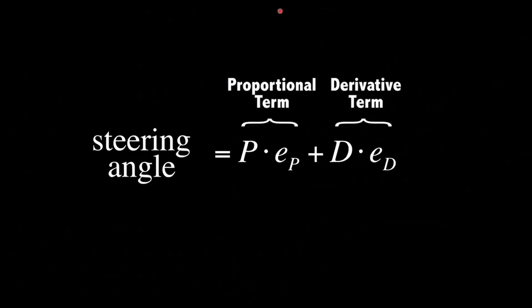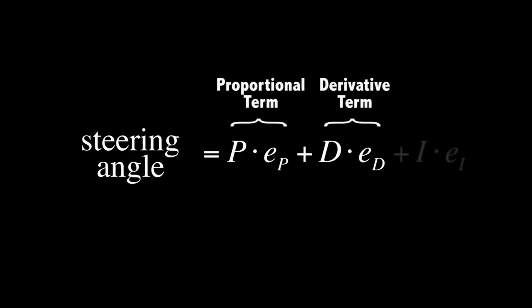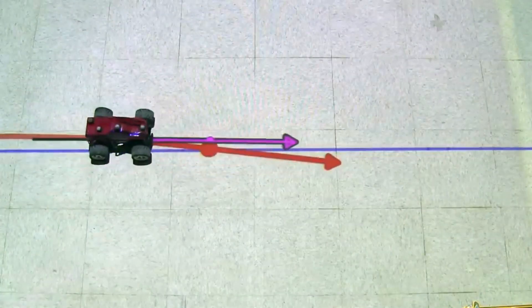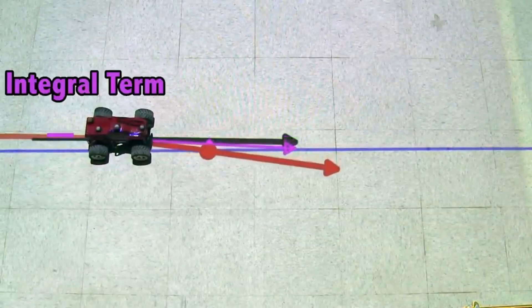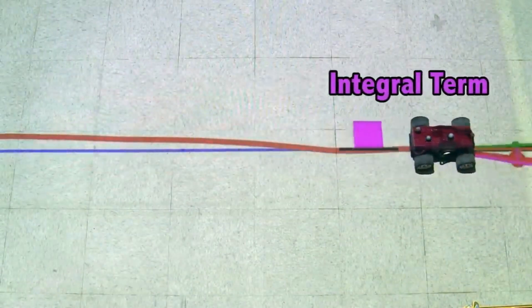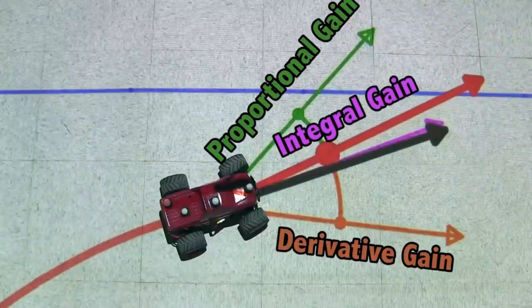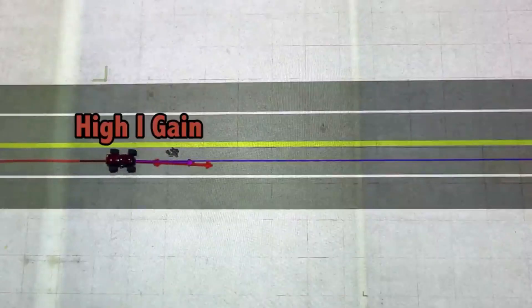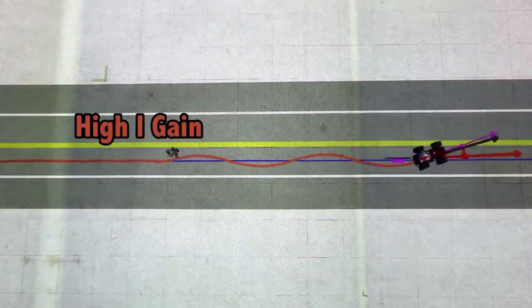Now we have taken care of sudden changes too, so why do we need the I term? We need the I term to compensate for error that accumulates due to environmental conditions or other factors. For example, as an obstacle changes its mean position and creates a constant accumulating error, the P and D terms won't be able to compensate for it since the error is not changing and is constant. That's where the I term comes in and reduces the accumulating error.